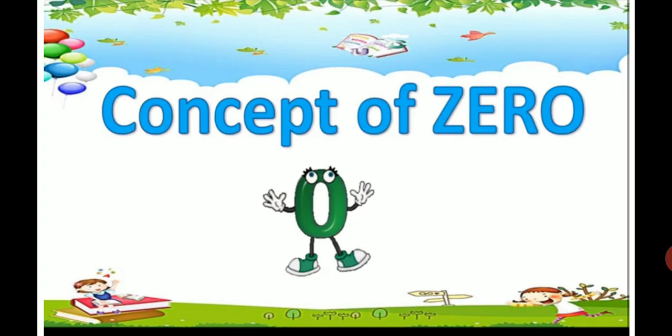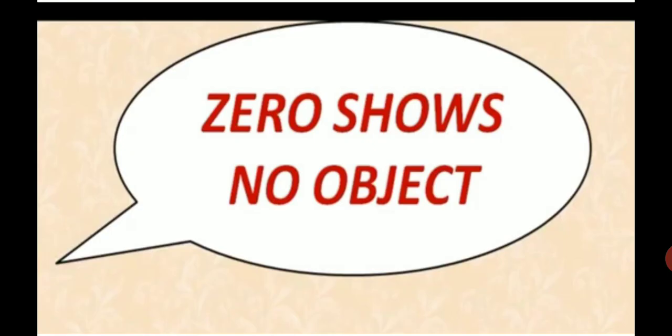Let's start with the concept. So kids, what is zero? Zero basically shows no object. If I'm saying I have zero toffee in my hand, that means I have no toffee. I have nothing.